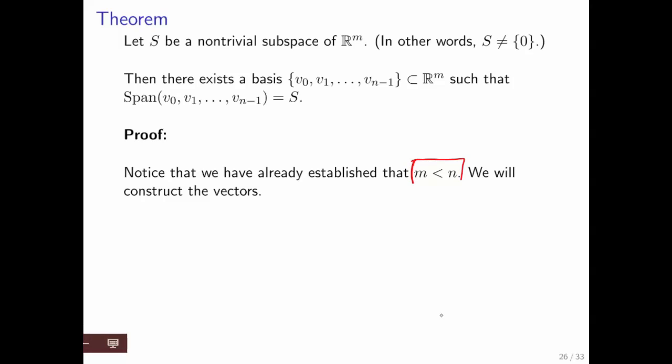The first thing we know is that m—this is wrong. We've already established that you need at most m vectors. So we know that n is less than or equal to m.